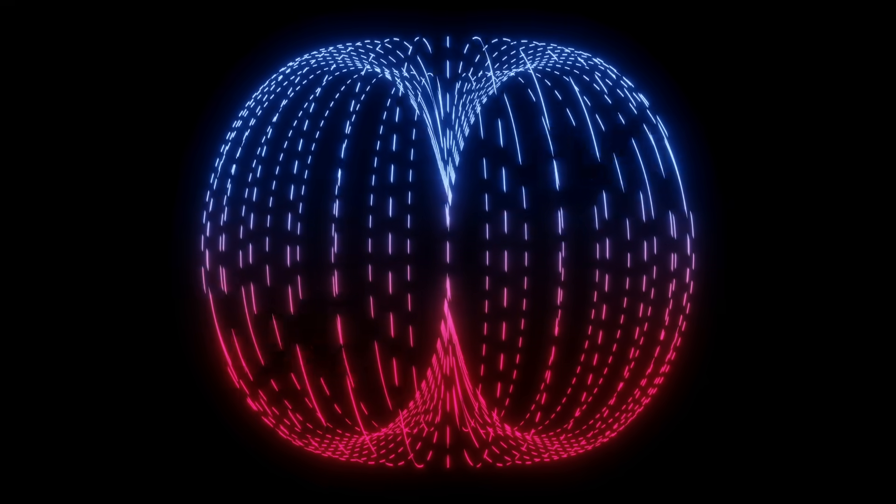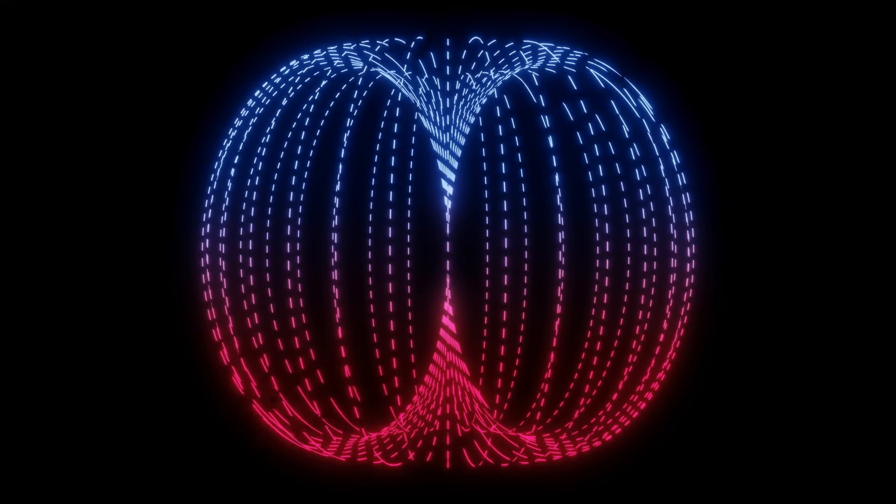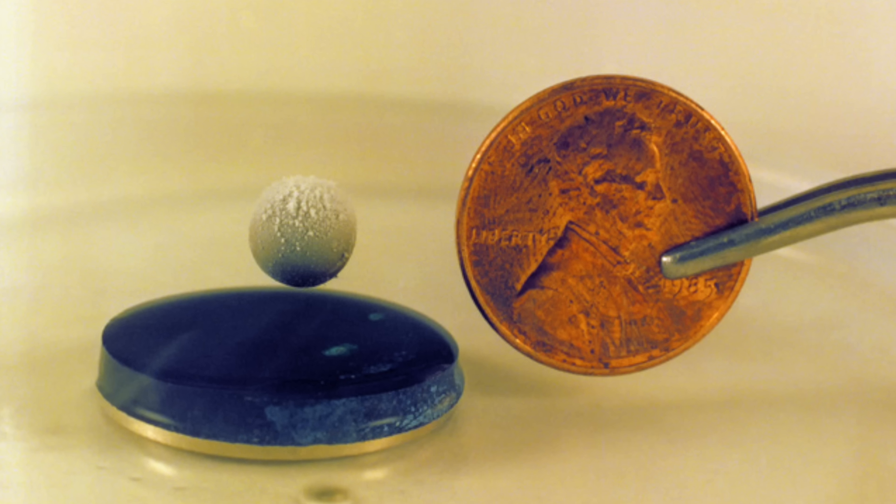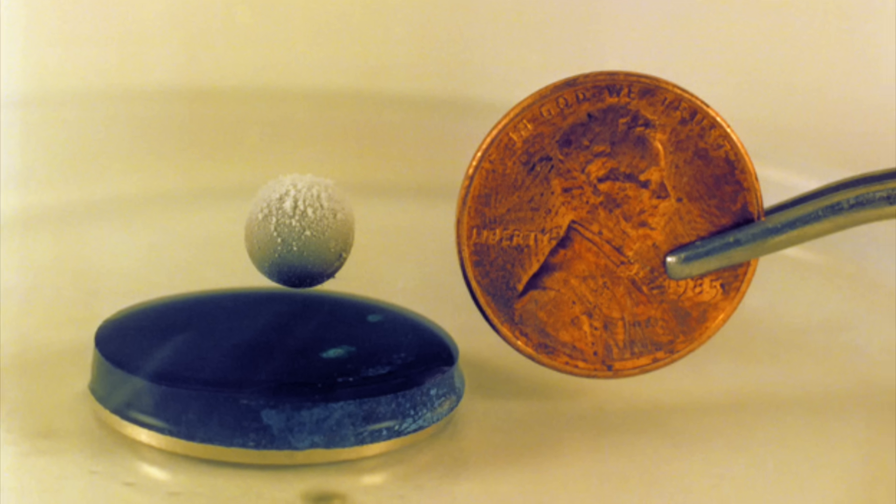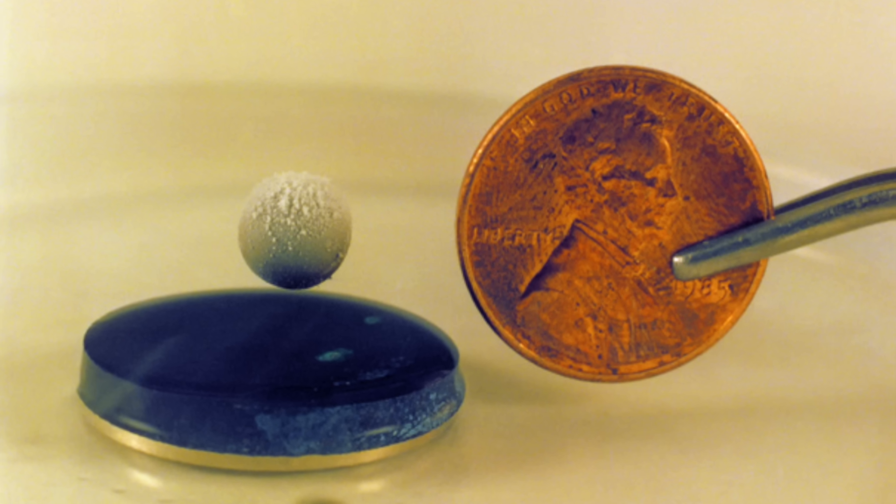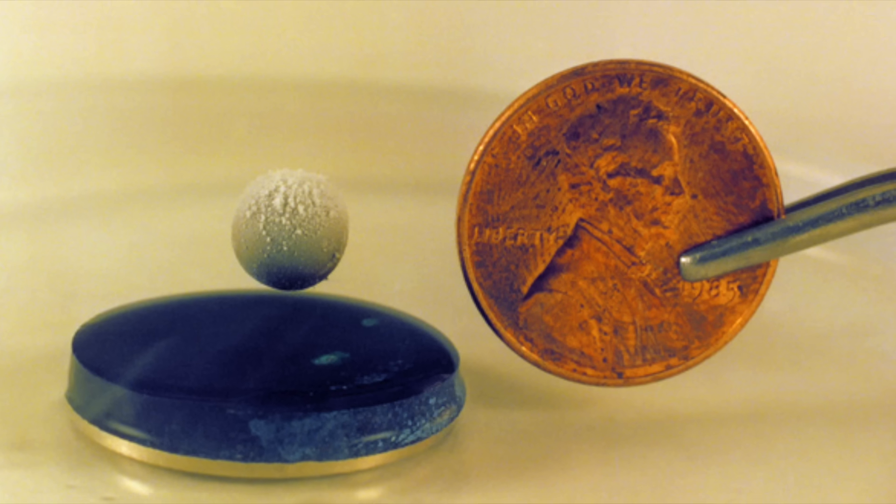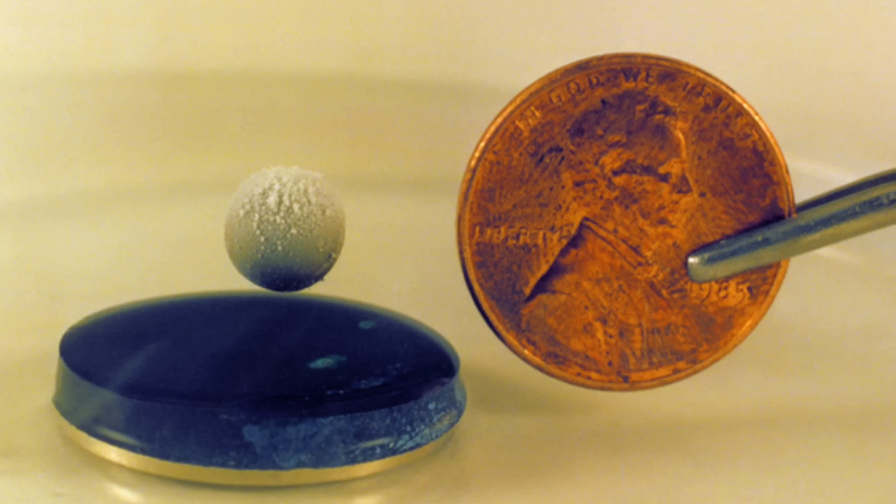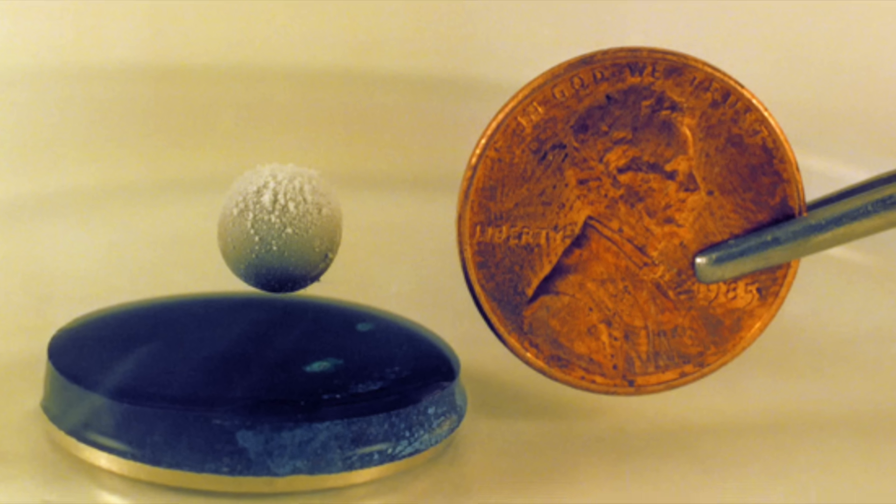This is called the Meissner effect, and its most marked effect is levitation. This happens because when a magnet is placed above a material becoming superconductive at low temperatures, any magnetic fields that were passing through the superconductor are expelled, forcing the magnet to levitate as though it were repelling from another magnet.